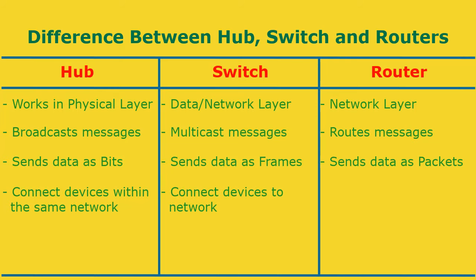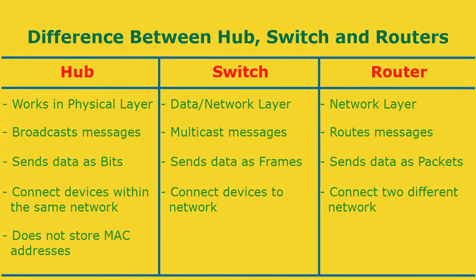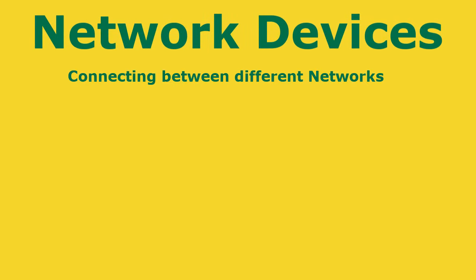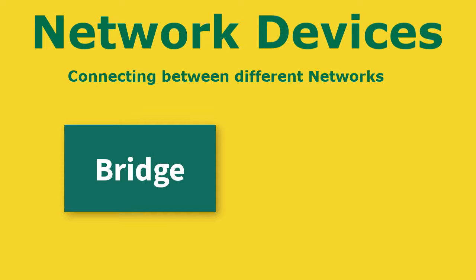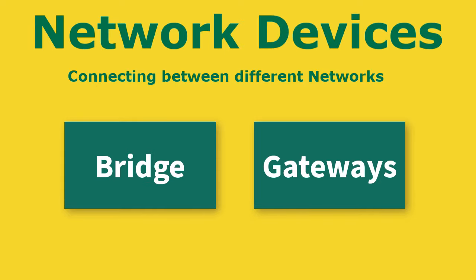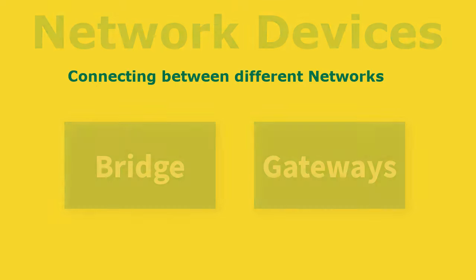A hub is used to connect devices within the same network, a switch is used to connect devices to a network, while a router is used to connect two different networks. A hub does not store MAC addresses locally, while both switch and router do store addresses.